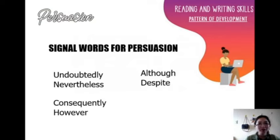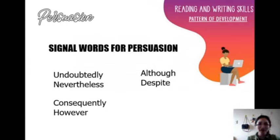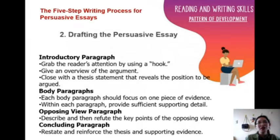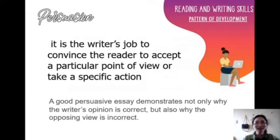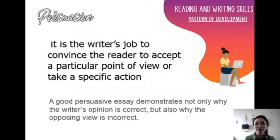These are some signal words or transitional words for persuasive paragraphs that you can use, but it is not limited to these. Some examples are: undoubtedly, nevertheless, although, despite, consequently, however, and many more. To review, in writing a persuasive essay you are trying to convince readers to take the same side of the argument as you — if you are against the argument, you want readers to be against it as well. And of course, not only that, but you want them to take a specific action.